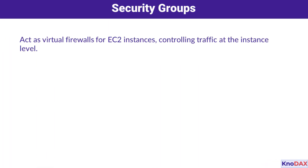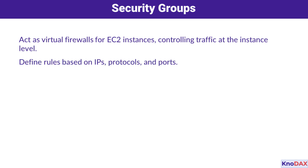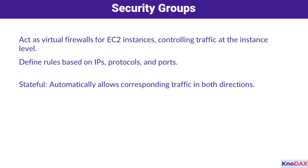Security groups act as virtual firewalls for your EC2 instances. They control both inbound and outbound traffic at the instance level. By defining rules based on IP addresses, protocols, and ports, you can regulate what traffic is allowed. Security groups are stateful, meaning that if traffic is allowed in one direction, the corresponding response is automatically permitted.